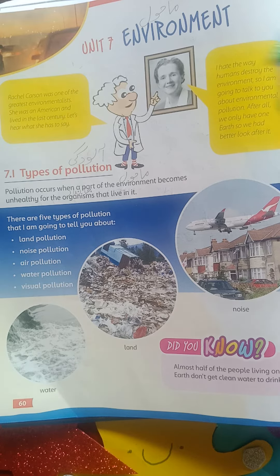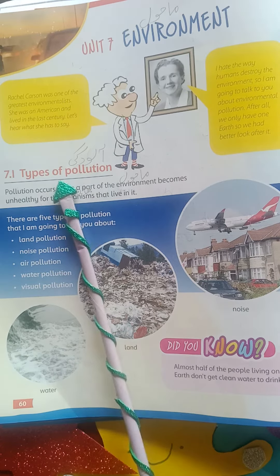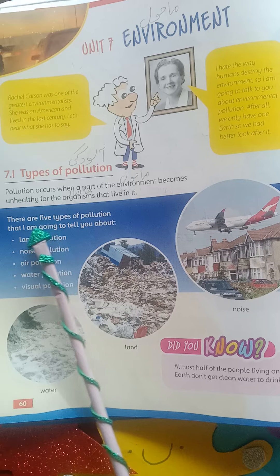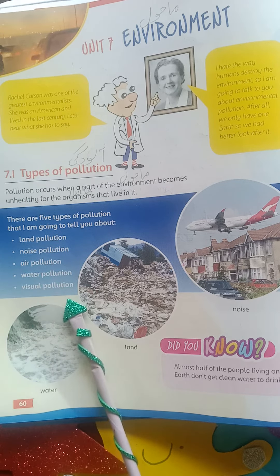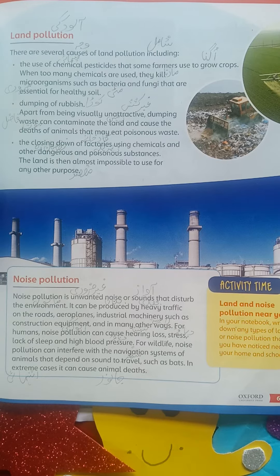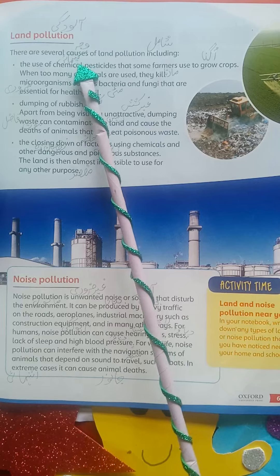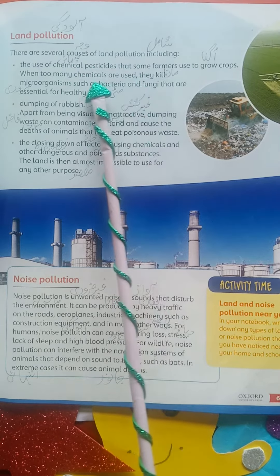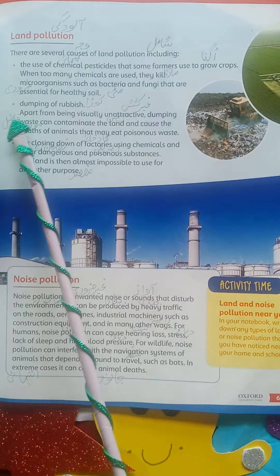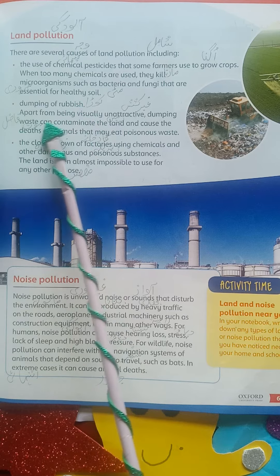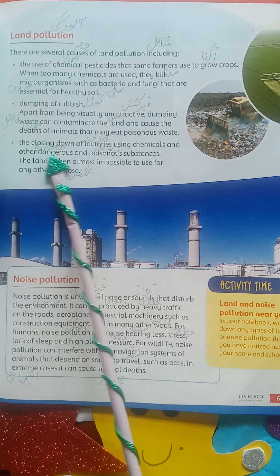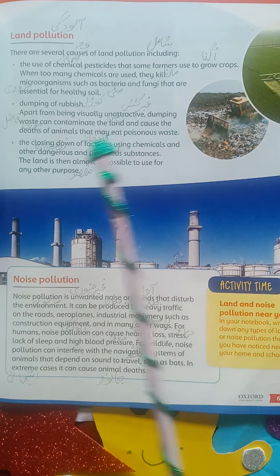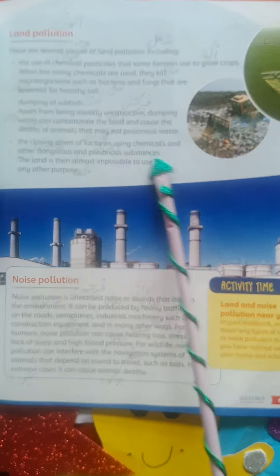Here is our Unit Number Seven: Environment — mahol. Types of pollution — aloodgi ki kisme. There are five types of pollution: land, noise, air, water, and visual. Land pollution — zamini aloodgi. There are several causes of land pollution: chemical pesticides, dumping of rubbish, virtually unattractive dumping, closing down of factories, using chemicals and other dangerous and poisonous substances.